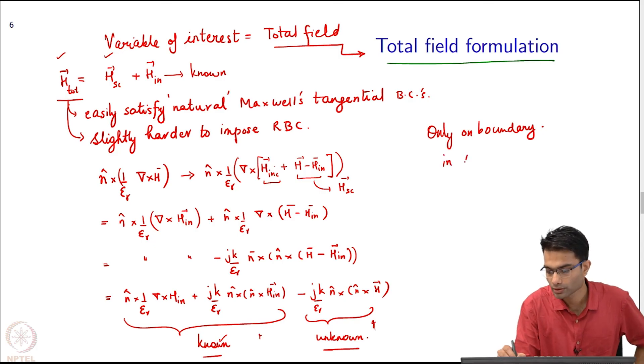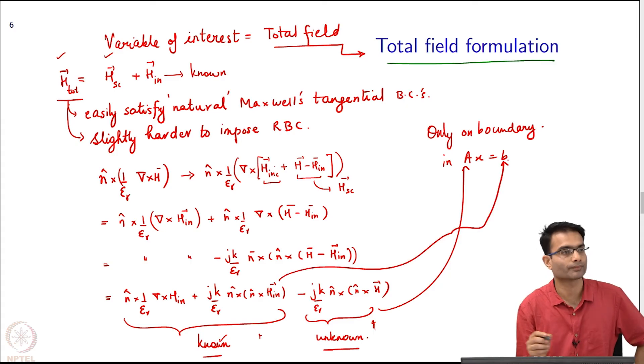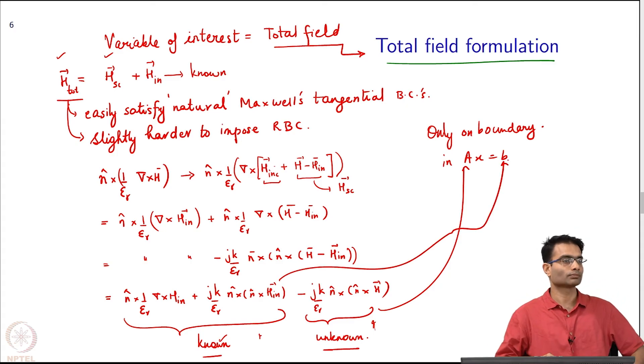Remember this term was going to coming into play only on the boundary, only on boundary. So this known term over here, this is what is going to give me a nonzero right hand side. This h over here which has the unknown term I will move it back, and when I get Ax equals b I will move this guy back to the left hand side and keep this on the right hand side.